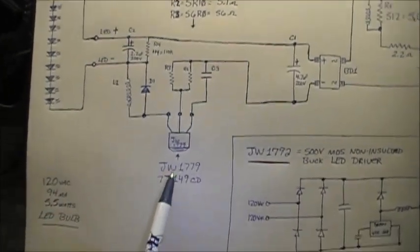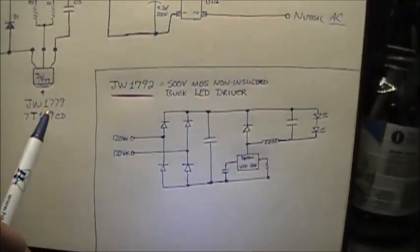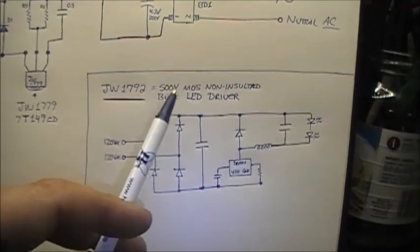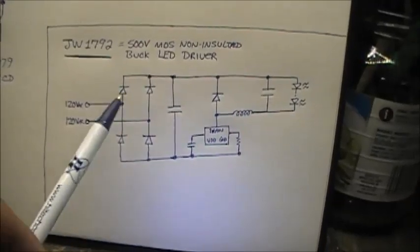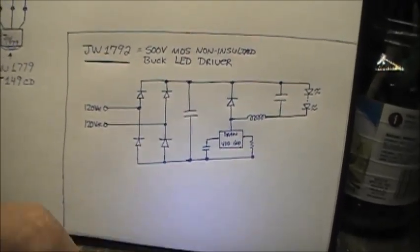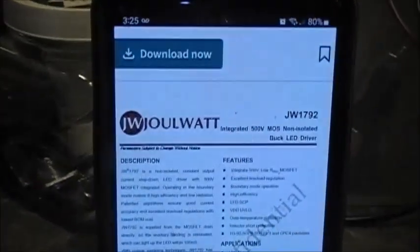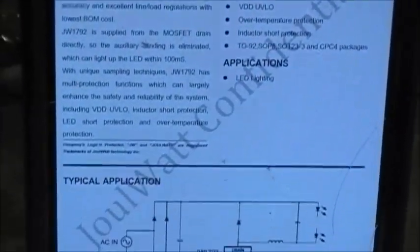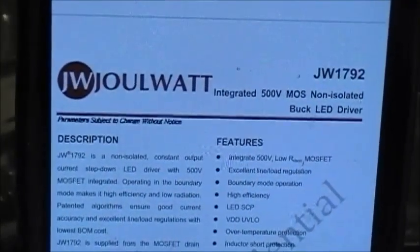The JW1779, I didn't find anything online for this one, but it did manage to come across one for a JW1792, which is a 500 volt mass non-insulated buck LED driver. And that's the circuit that it would be in. You can actually find the information on it, that particular one, right here. Tell you all about it, including the little schematic you can download there if you want to read a little bit more on it.